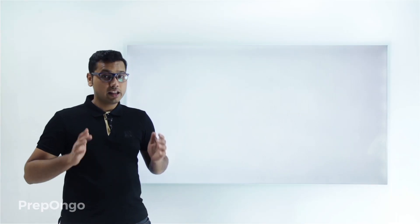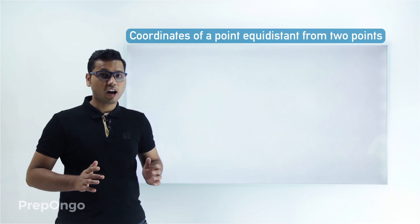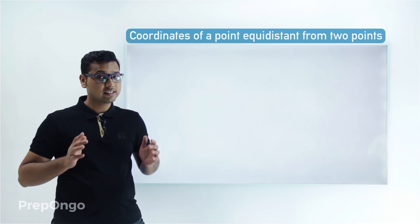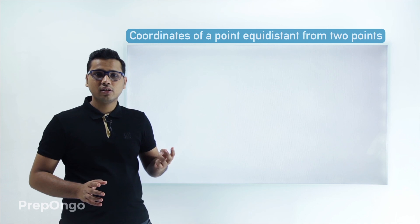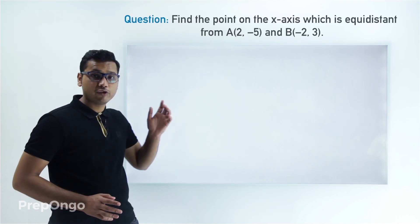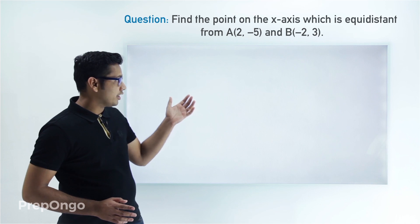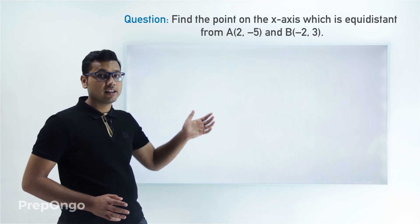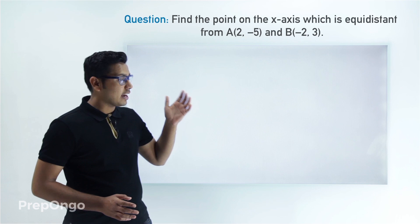Hello everyone. In this video we are going to learn how to find the coordinates of a point which is equidistant from two points. Here is a question on that: we have to find the coordinates of a point which is present on the x-axis and is equidistant from A and B.